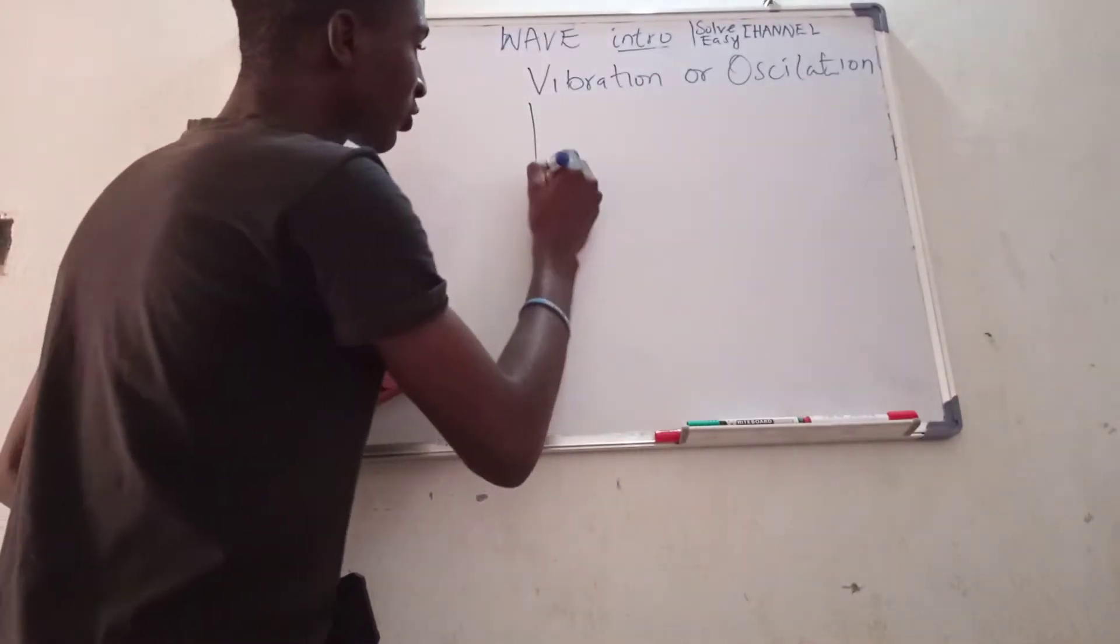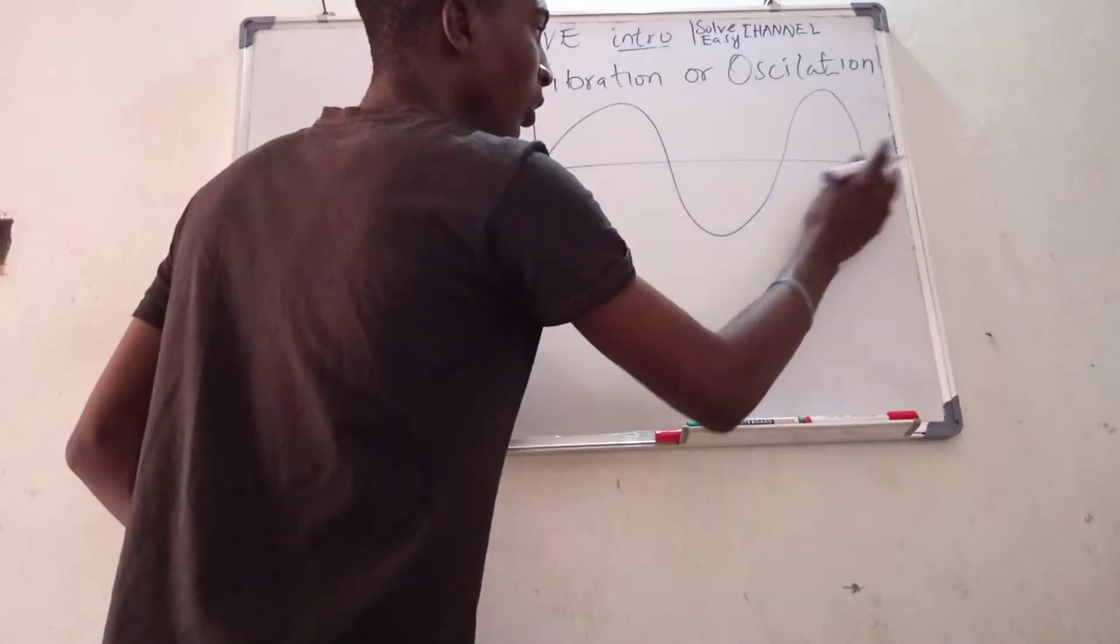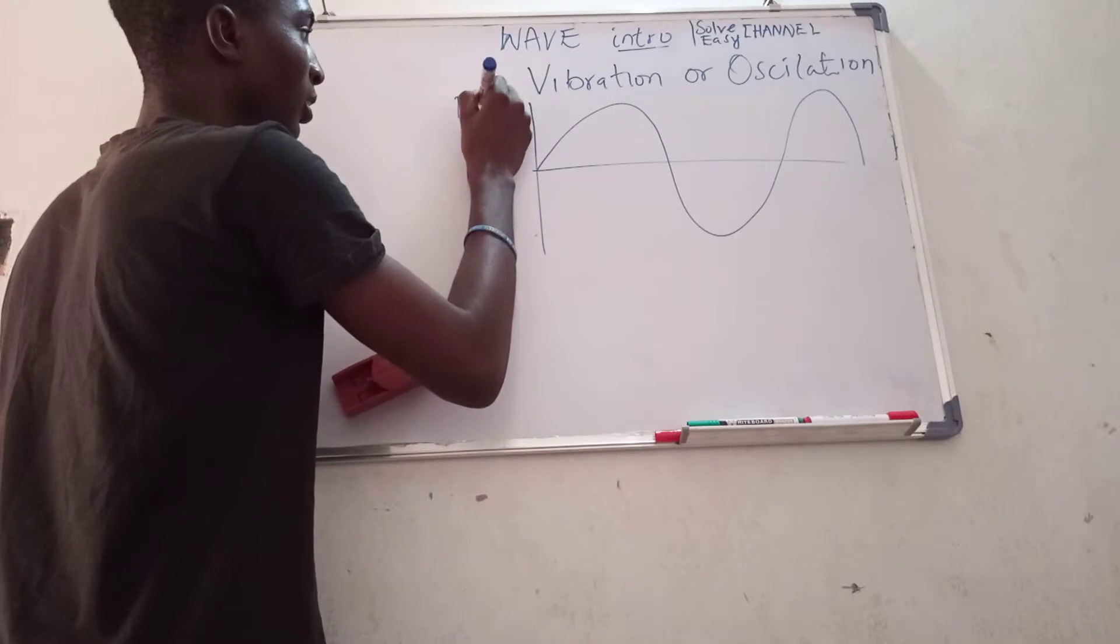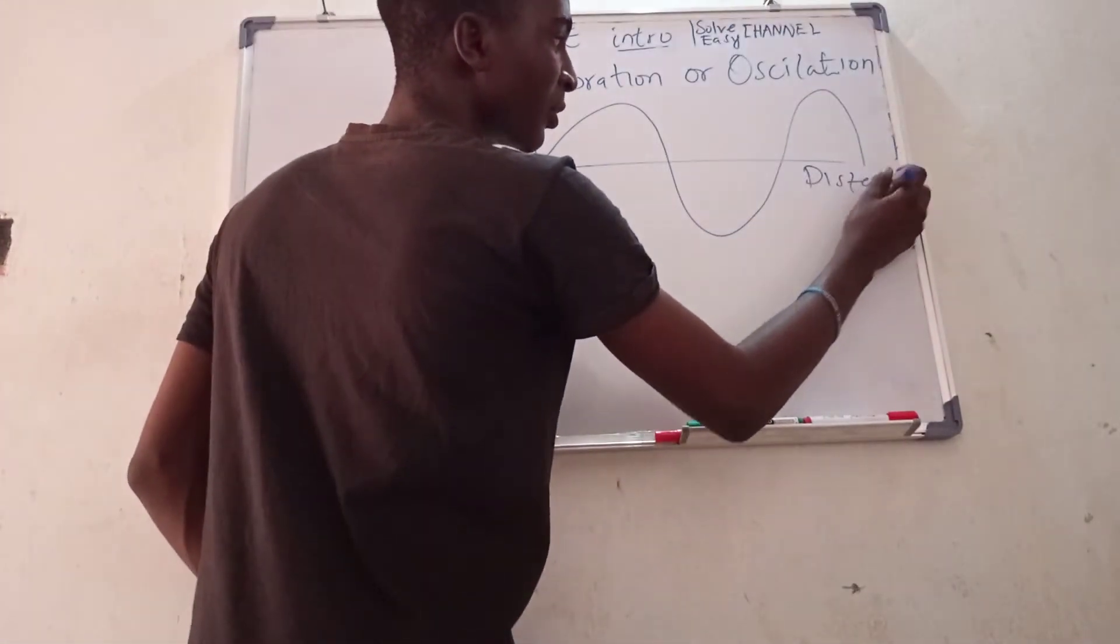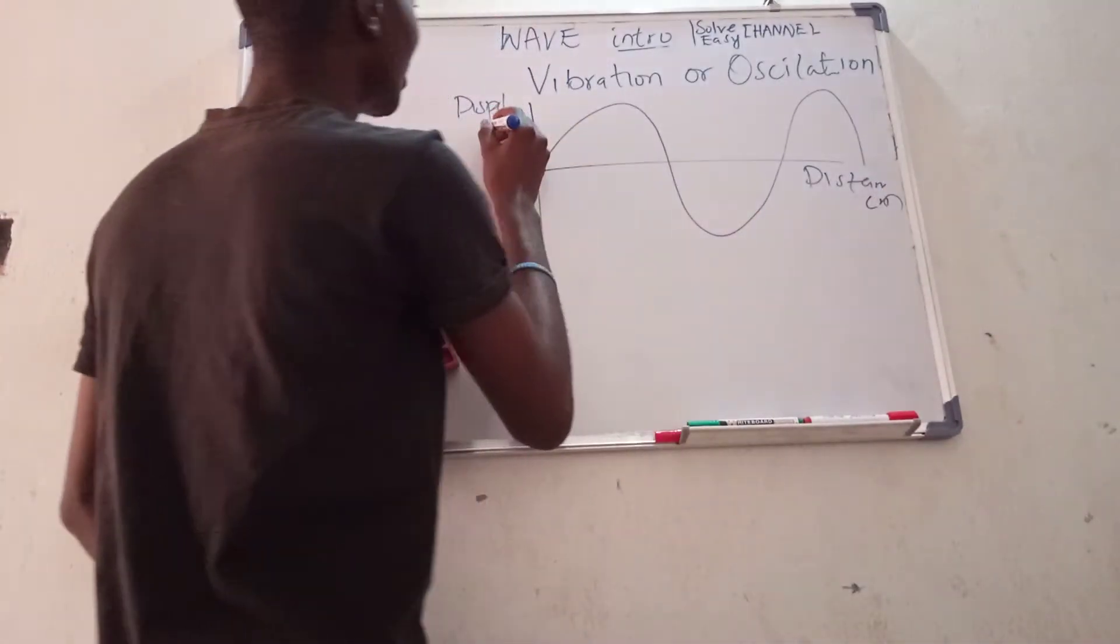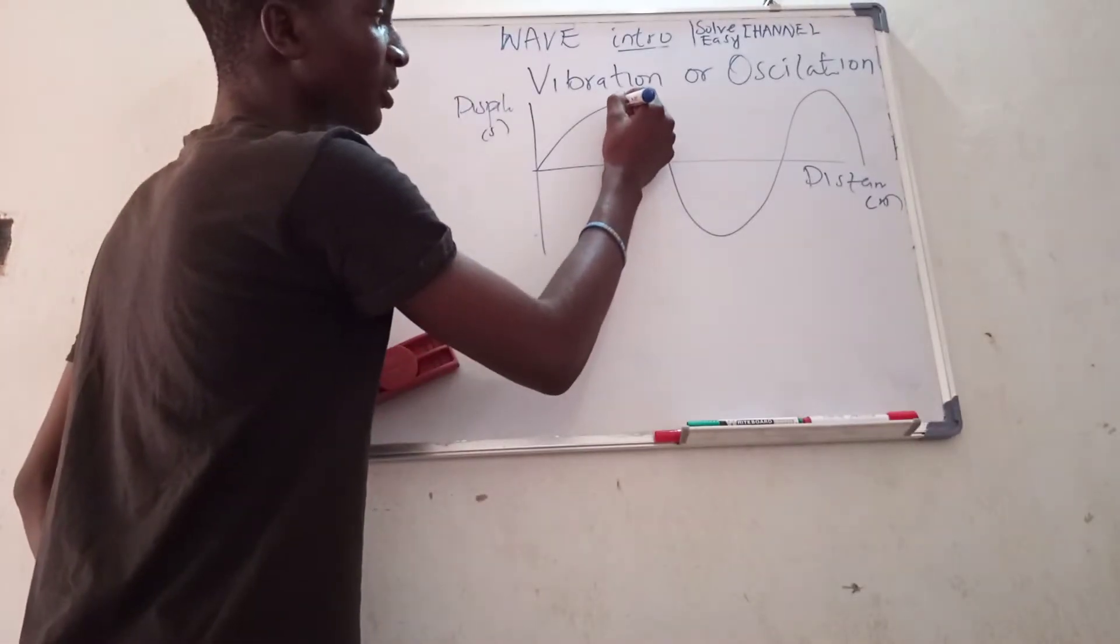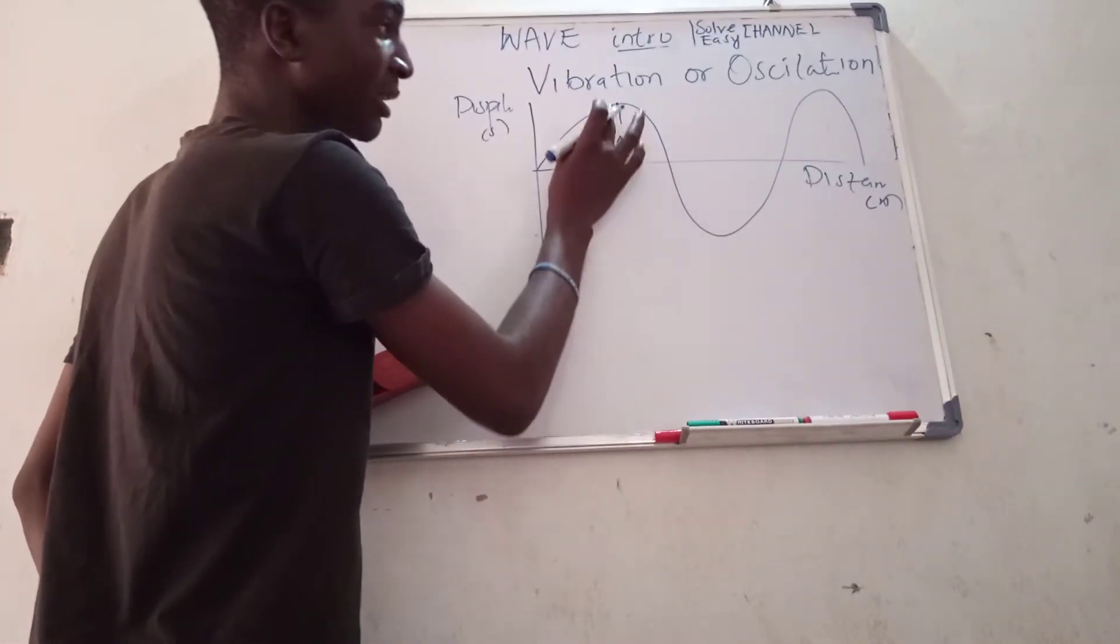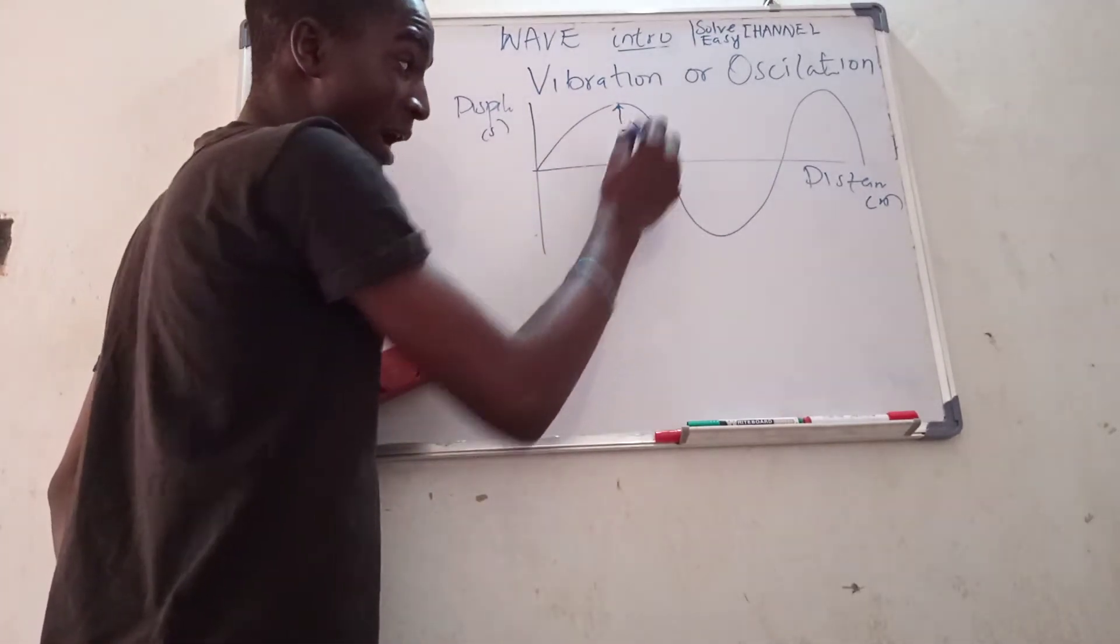Now, if I'm having a transverse wave, this is my displacement and this is my distance. So this is like a displacement-distance graph because this is in meters and this is also in meters. Now, at this point, this is my maximum displacement, and I call it my amplitude.